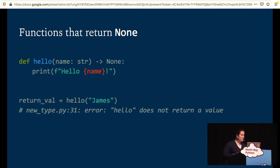It's also possible to annotate functions that return none. The type of none in Python is none type, but in the type annotations, we just use none. MyPy will complain if I try to assign the none return value from this function to any variable. And this can help catch some types of errors and bugs.